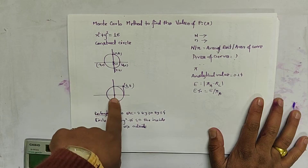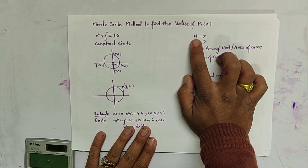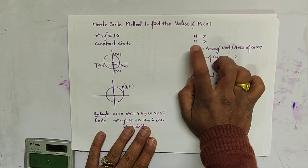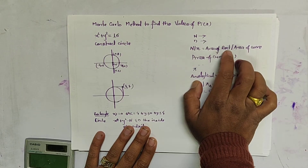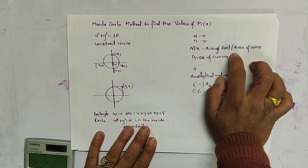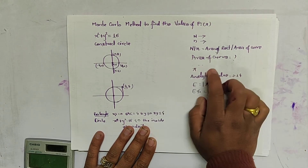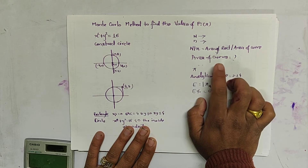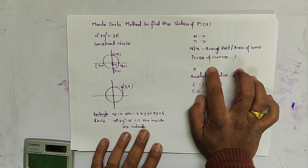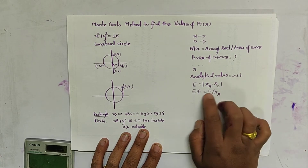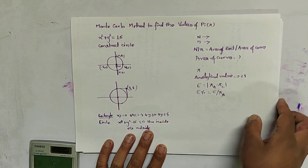The total number of random numbers generated is termed as capital N, and the total number of random numbers inside the boundary is known as small n. By the Monte Carlo method, we calculate N/n, which equals the area of the rectangle divided by the area of the curve. The area of the curve is compared with the analytical method — for a circle, it is πr². The analytical value of pi is 3.14. The error is the analytical value minus the calculated value, and the error percent is error divided by the analytical value.